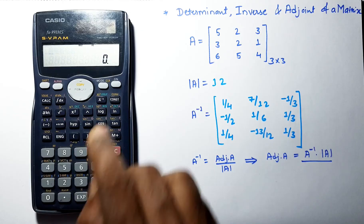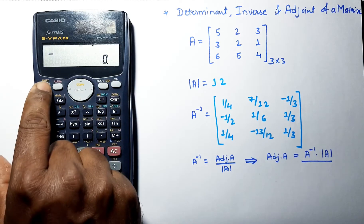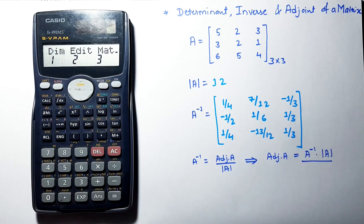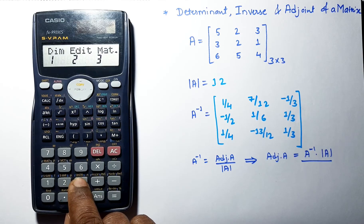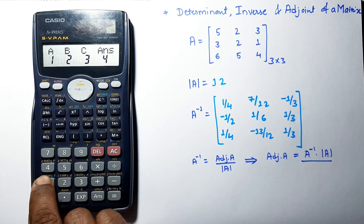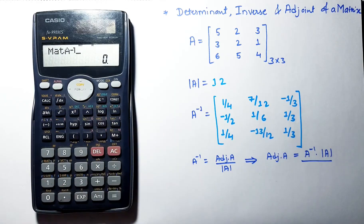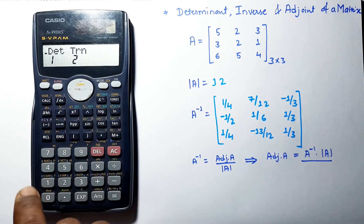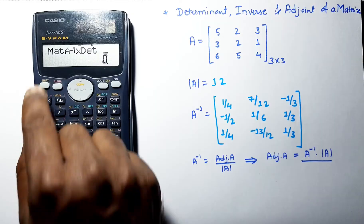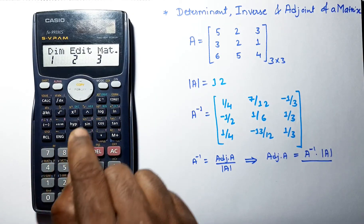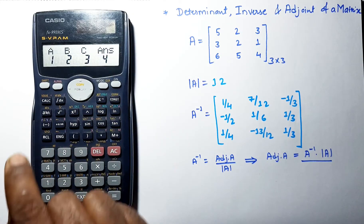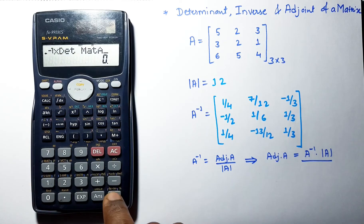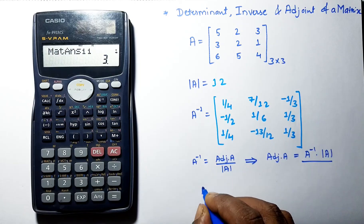Let's calculate this. Go to Shift 4 to access the matrix menu, select matrix A, press inverse, then go to matrix again, select determinant, select matrix A, and press equals. We are now getting the value of the adjoint of A.